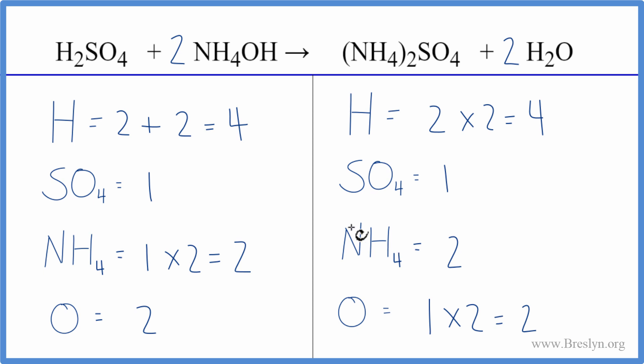So with double displacement reactions like this, or neutralization reactions, if you have an ion that appears on both sides, just count that as one thing. That'll keep your numbers straight, make it a lot easier to balance the equation.